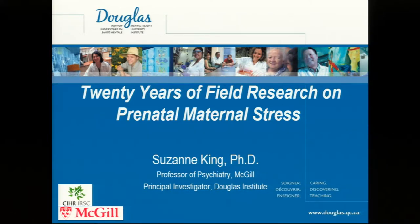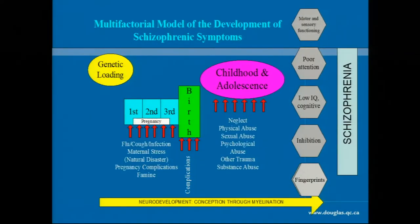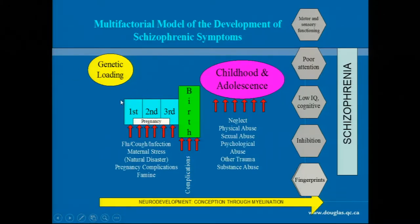My main interest is really schizophrenia and the development of schizophrenia. Approximately 25 years ago, I created this model that reflects the literature on the genetic and environmental risk factors for the development of schizophrenia. We know that there's genetic loading — the more closely related you are to somebody with schizophrenia, the higher is your risk. We also know that pregnancy and birth are very critical periods.